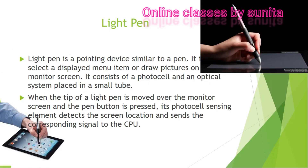The next input device is the light pen. A light pen is a pointing device similar to a pen; it is used to select displayed menu items or draw pictures on a monitor screen. It consists of a photo cell and an optical system placed in a small tube. When the tip of the light pen is moved over the monitor screen and the pen button is pressed, its photo cell sensing element detects the screen location and sends the corresponding signals to the CPU.